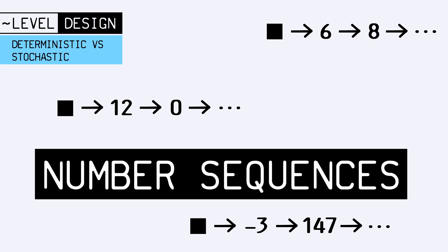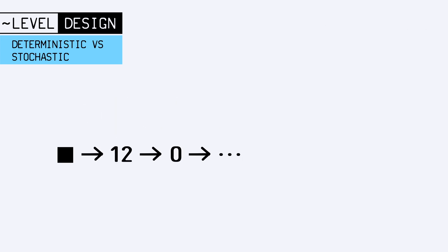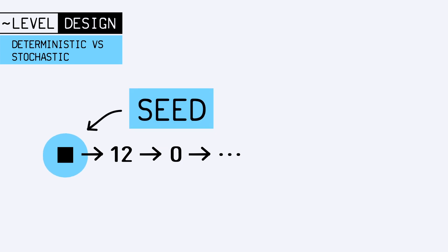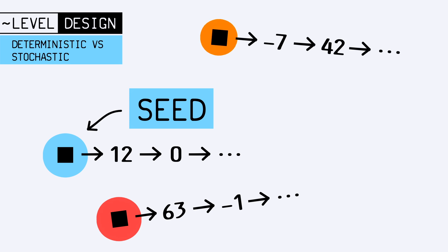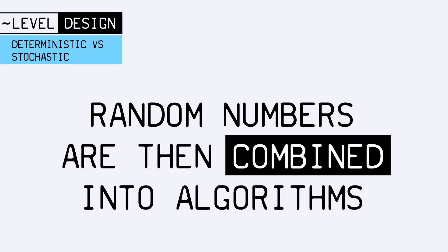That's why, to truly get random results each time you run your game, you have to set this start point — called the seed — to something different each time, so as to get different number sequences and simulate randomness. Once you have those pseudo-random numbers, you can combine them in various ways to get a stochastic process.